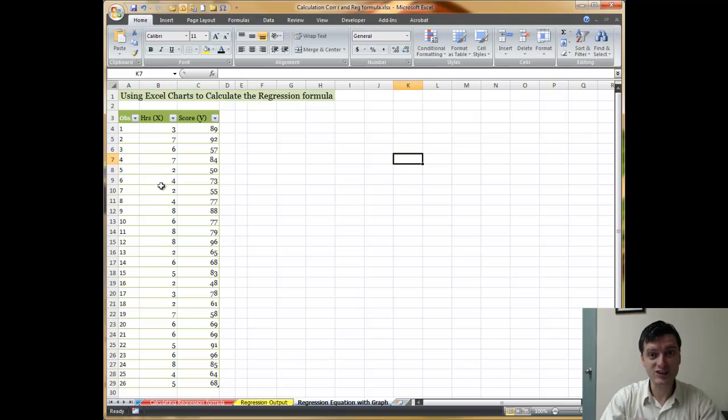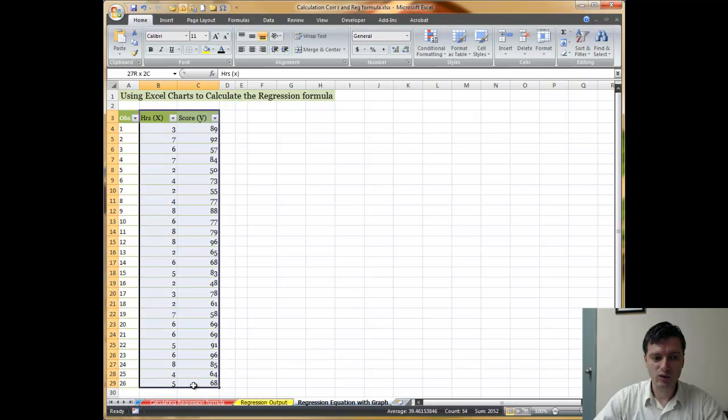There are two easy ways, but one is easier than the other and shorter. The first thing you do, you would go and select in Excel both independent and dependent variable together with the header, hours and score.